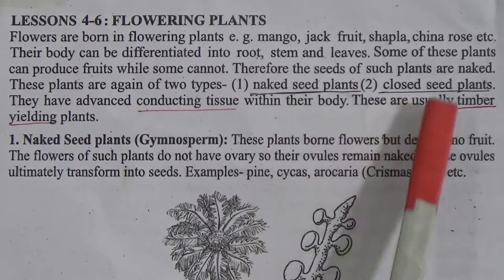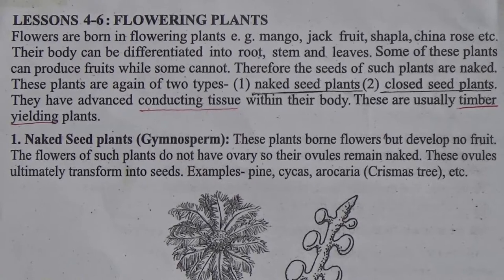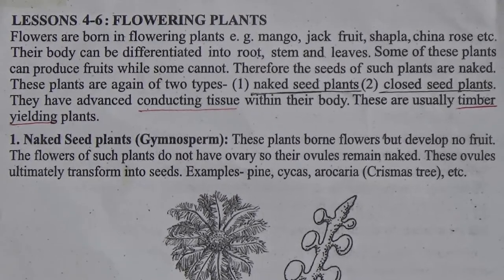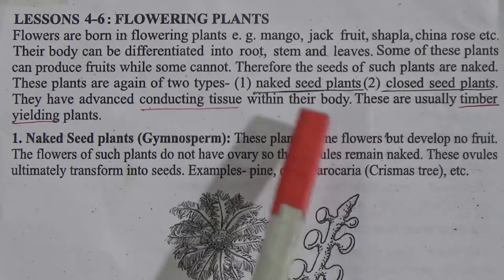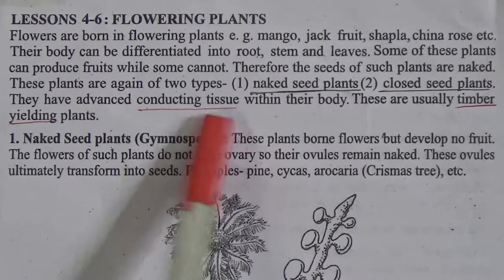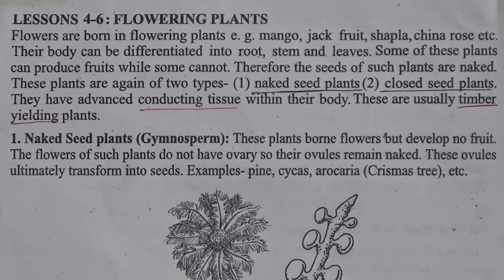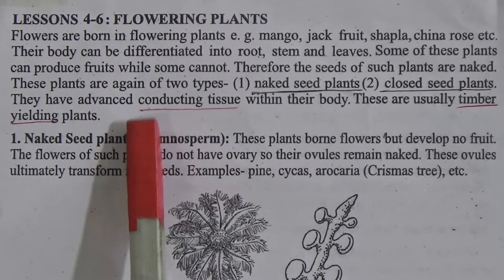Flowering plants are again of two types: next seeds plants and closed seeds plants. In next seeds plants, their seeds are open, not covered with fruit or other things. In closed seeds plants, their seeds are covered with fruits, leaves or other things. They have advanced conducting tissue within their body. Conducting means transportation tissue — in future classes you will study xylem and phloem tissue, which transport food and water from the stem to different parts of the plant.